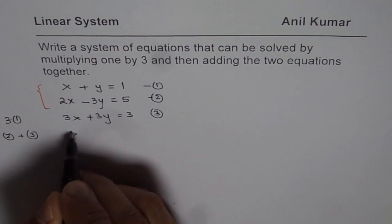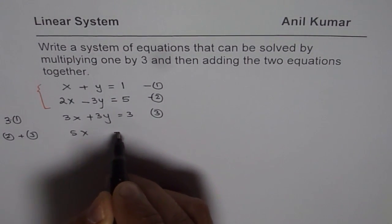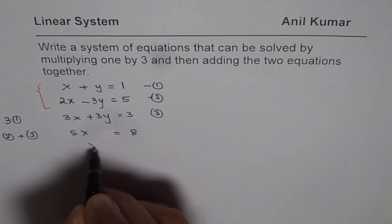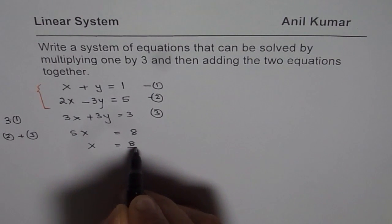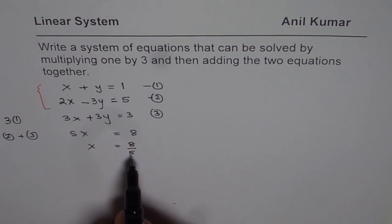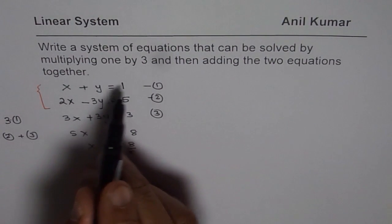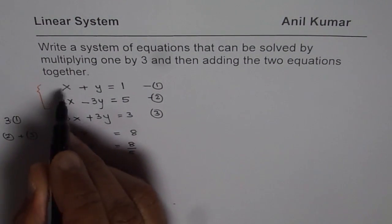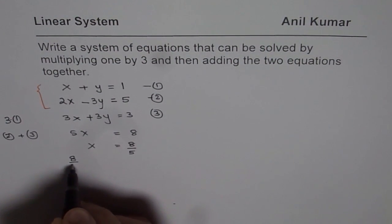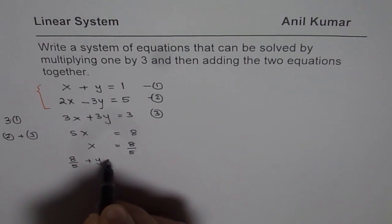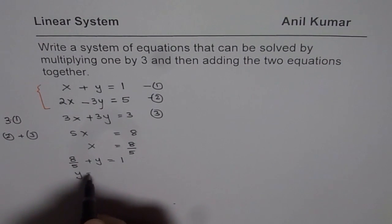When you add them, you get 5x, this cancels out, equals 8 and x equals 8 over 5. So you have found one value. The other value you can find from equation 1. Let us substitute x here, which is 8 over 5 plus y equals 1.